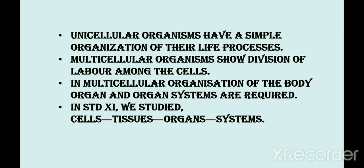We know that there are two types of individuals: unicellular and multicellular. Unicellular organisms have simple organization of their life processes — only a single cell performs all the functions of the body. But in multicellular organisms, there is division of labor among the cells, and organ systems are required. Cells combine to form tissues, tissues combine to form organs, and organs combine to form organ systems.